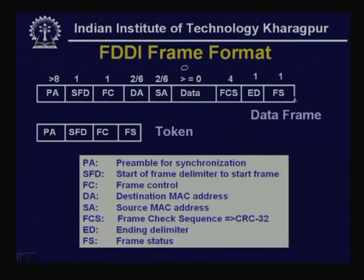The FDDI token includes a preamble for synchronization, a start of frame delimiter (SFD), frame control, and frame status. As you can see, the token is much smaller compared to the data frame.